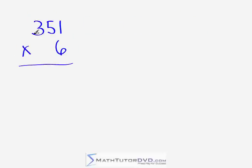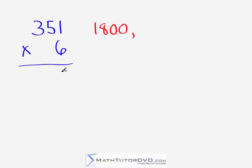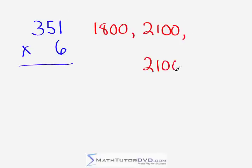Our next problem, moving up in complexity: 351 times 6. So: 300 times 6 — 3 times 6 is 18 plus two zeros — gives 1,800. Then 50 times 6 gives 300, so 1,800 plus 300 is 2,100. Finally, 1 times 6 gives 6, so the answer is 2,106. Pat yourself on the back — 351 times 6 is a pretty complicated problem that most people wouldn't try in their head, but you can handle it.